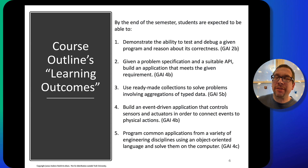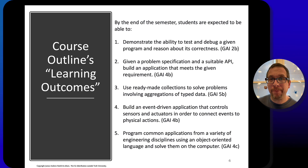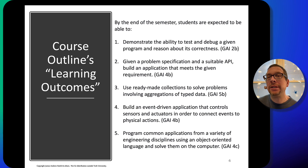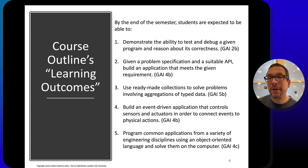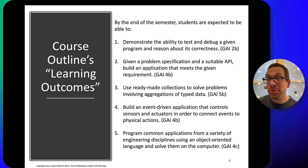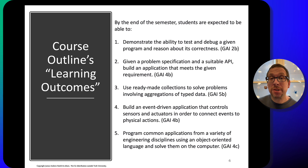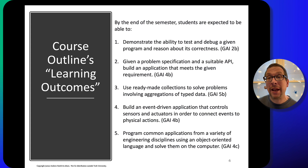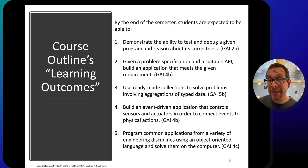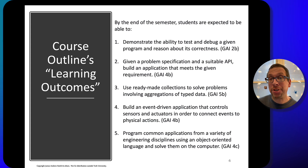Let's look at the course learning outcomes. The first is demonstrating an ability to test and debug a given program and to reason about its correctness. By the end of this semester, you are expected to be able to test and debug and reason about the correctness of a program. Students are also expected to take a problem specification and a suitable application programming interface and build an application that meets the given requirements.